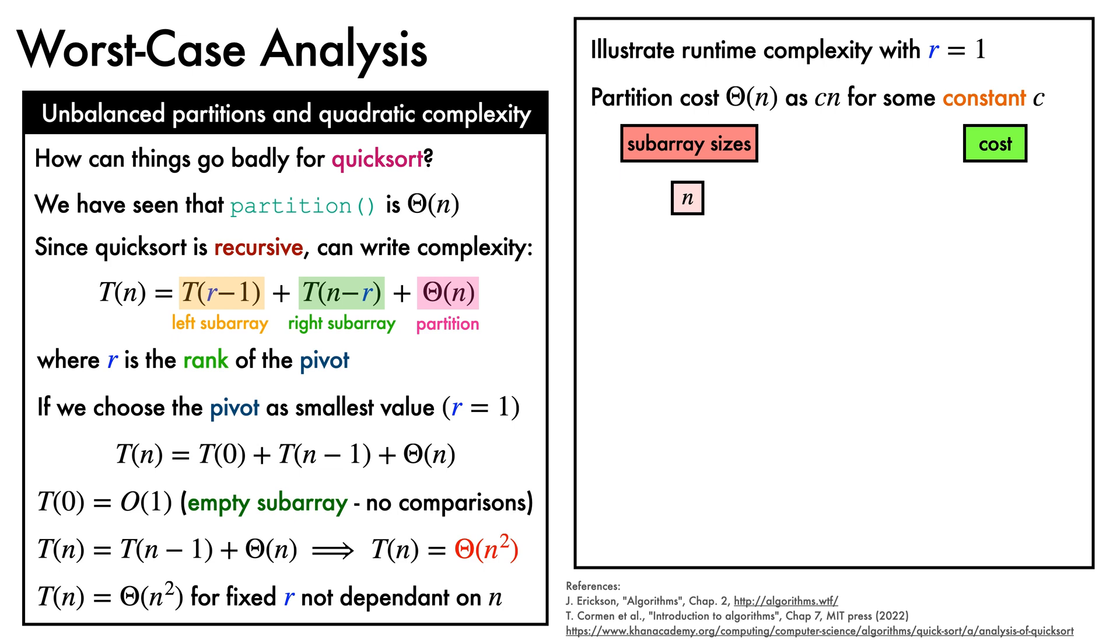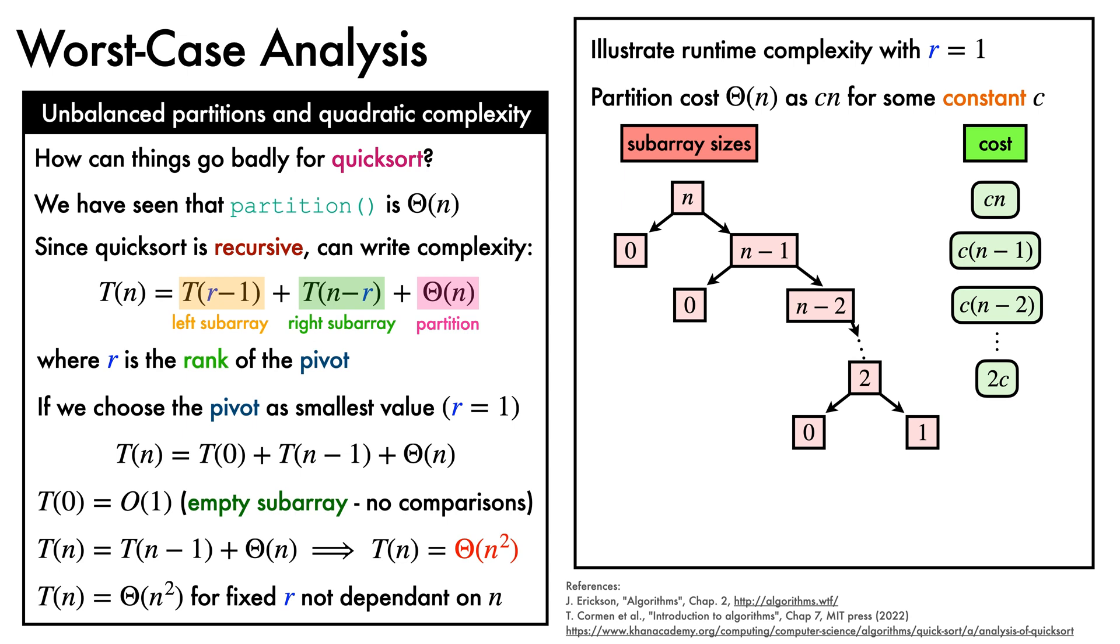When we call quicksort on the initial array, the subarray under consideration for sorting has n elements, and the partitioning cost is cn. Then we recurse into the left subarray of 0 elements, and the right subarray of n minus 1 elements. The first exits without calling partition, and the second contributes a cost of c times n minus 1. Then we repeat the recursion on the second subarray, contributing a cost of c times n minus 2. This continues down until we have a subarray of size 2, which contributes a cost of 2c. The final recursions into subarrays of size 0 and 1 do not call the partition function.